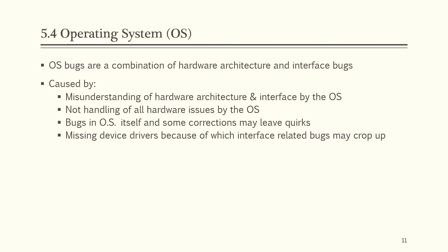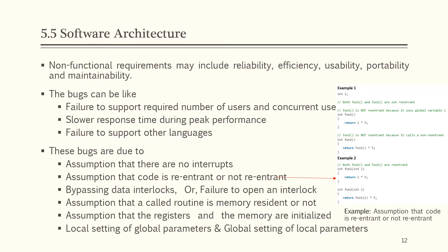Operating system bugs are a combination of hardware architecture and interface bugs. They are caused by misunderstanding of hardware architecture and interface by the OS, and failure to handle all hardware issues. When a hardware issue is encountered, the OS usually shows an error message with an error code. Some hardware issues may be ignored or not identified. Bugs in the OS itself, and missing device drivers, can also cause interface-related bugs.